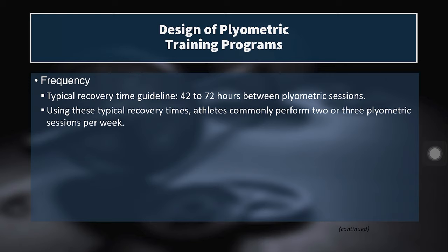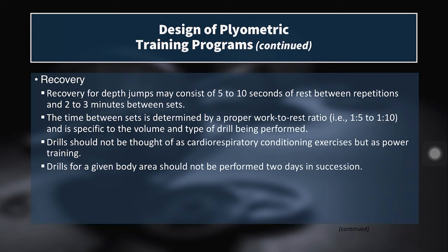Regarding frequency, athletes typically require at least 48 to 72 hours between plyometric sessions. This varies depending on the volume and intensity — a small maintenance session or low-intensity plyometrics in the warm-up probably doesn't require 48 hours of recovery. On the other hand, if the entire session was devoted to plyometric activities, 72 hours or more should be given. In general, two to three days between sessions is ideal, and it depends on whether plyometrics are the main focus, the volume performed, and the intensity of the drills.